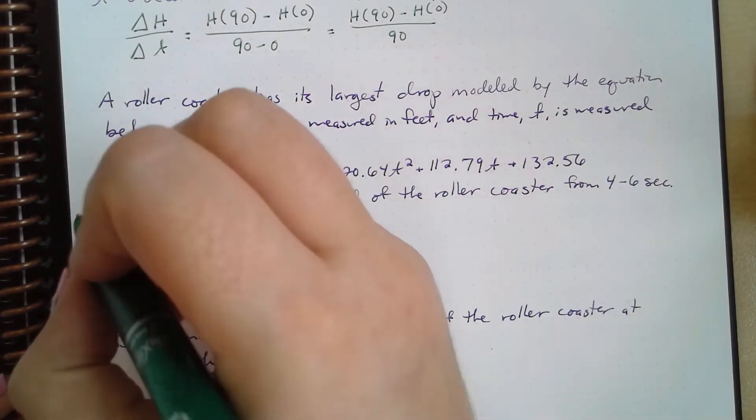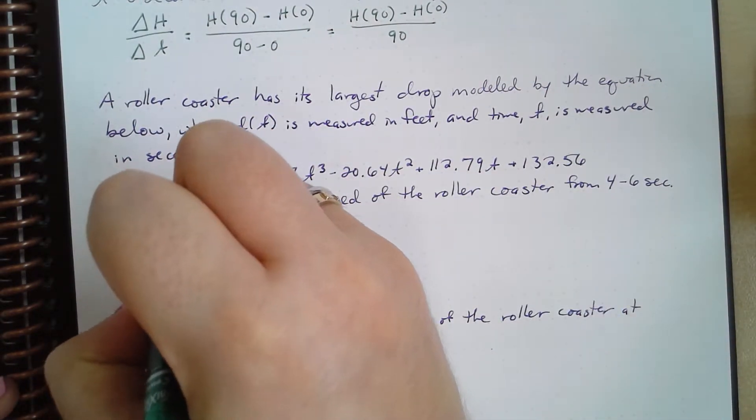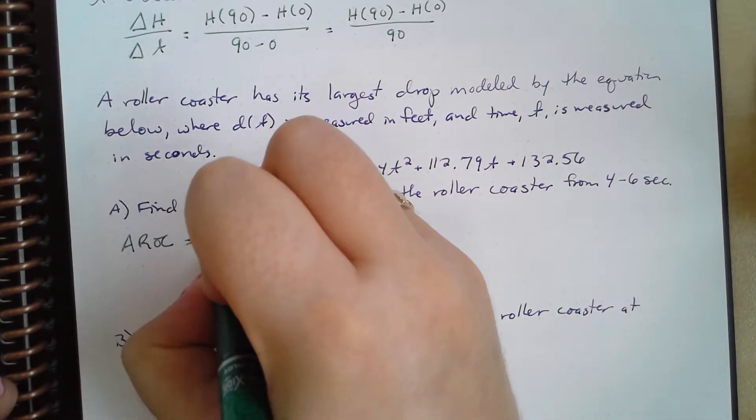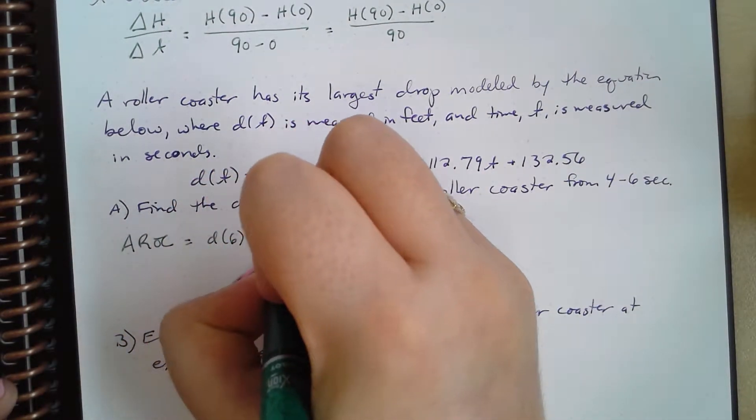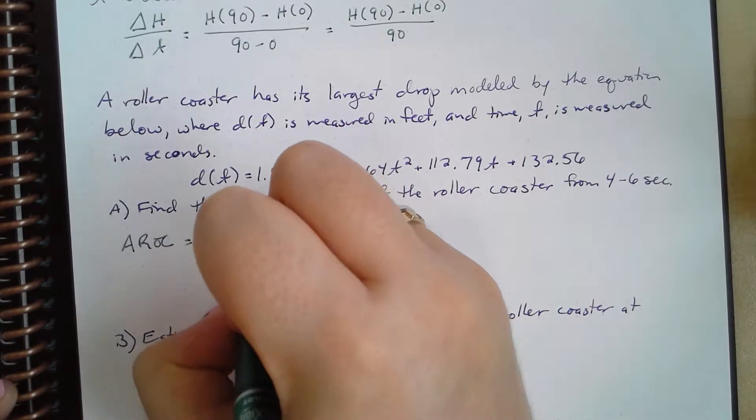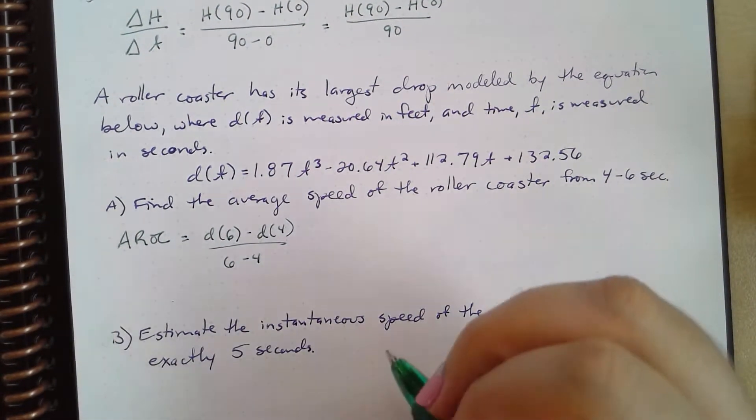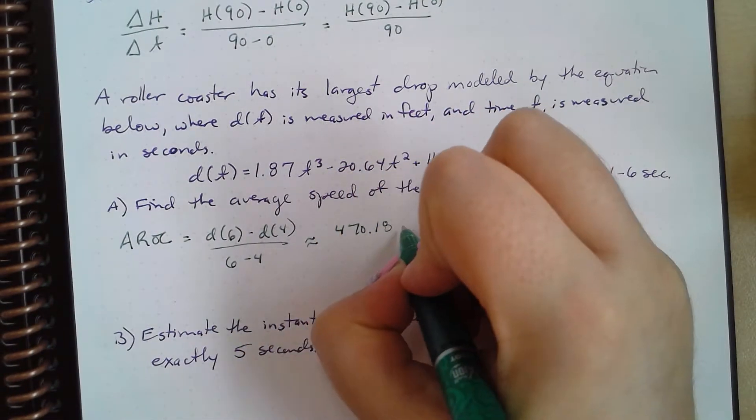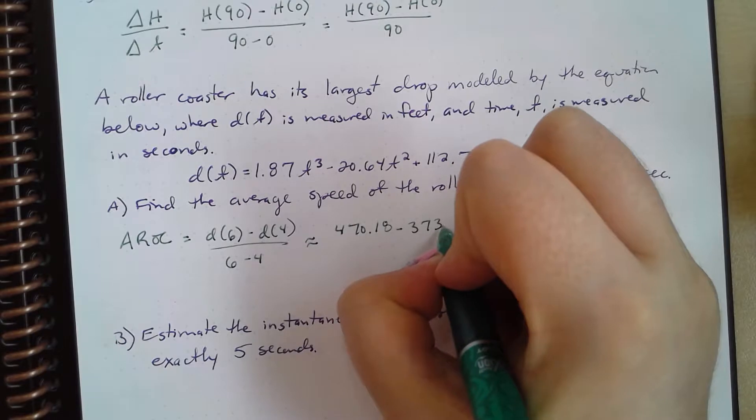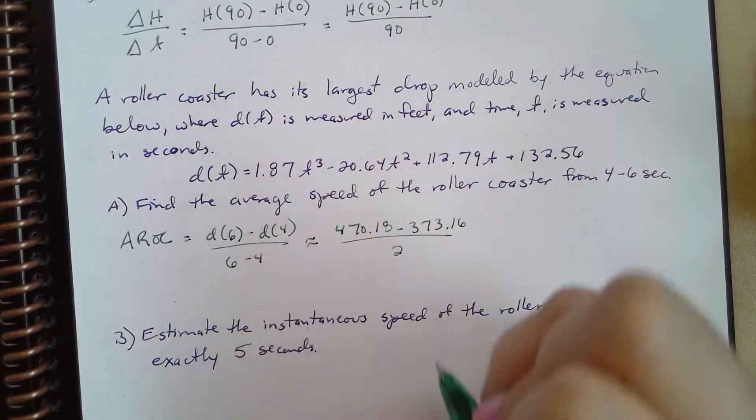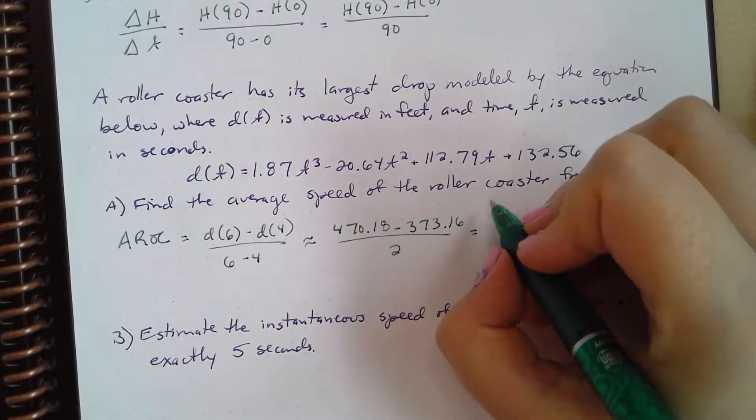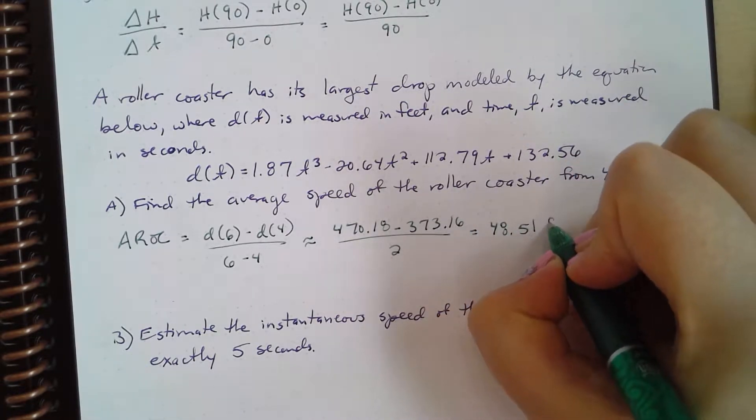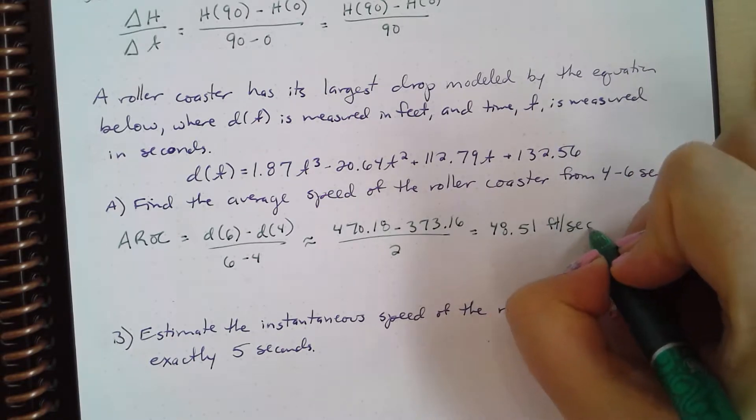We are asked to find the average speed of the roller coaster from 4 to 6 seconds. Well, to do that, our average rate of change, which I'm going to write as AROC, is equal to d(6) minus d(4) over 6 minus 4. And I've already calculated this for us. So this is approximately 470.18 minus 373.16 divided by 2, which simplifies to about 48.51 feet per second.